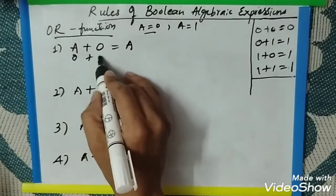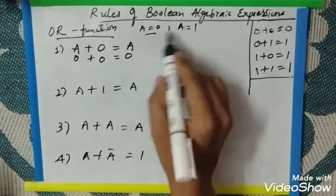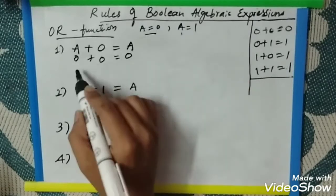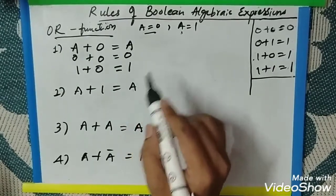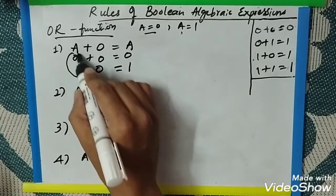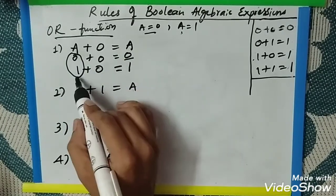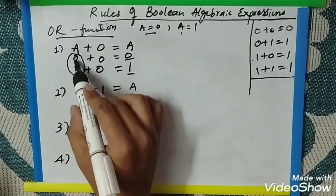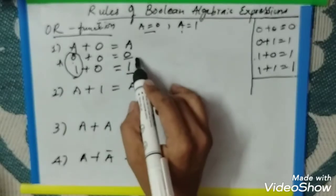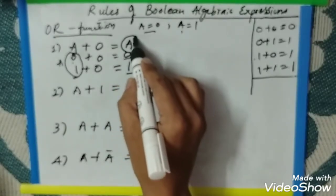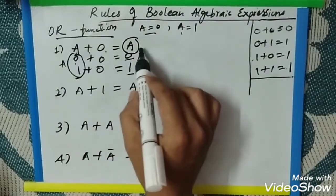first one, 0 plus 0, you will be getting 0 plus 0 is 0. Next, I will substitute A equal to 1. 1 plus 0, you are getting 1 plus 0 is 1. Now you can see, these numbers are A value. When you are giving 0, you are getting the answer as 0. When you are giving 1, you are getting the answer as 1. That means A is repeating where A is there as input, answer is also A. Therefore, it is proved that when A is OR with 0, it is equal to A.